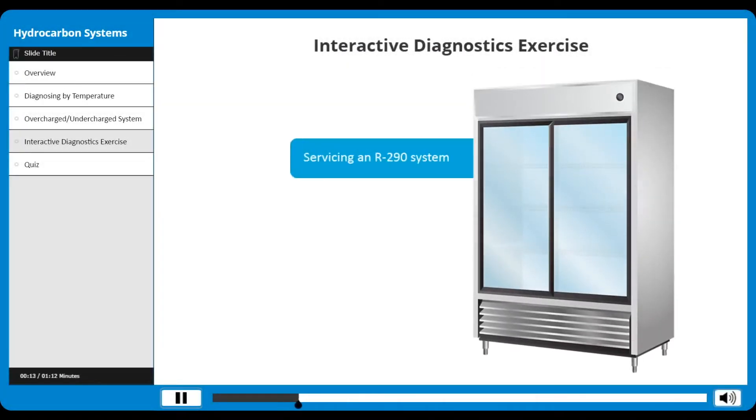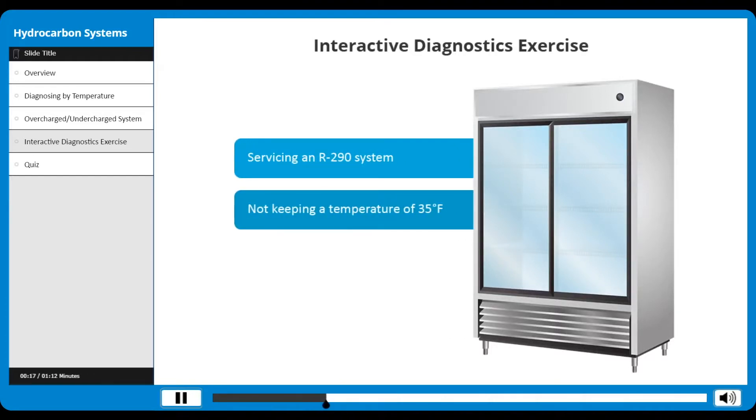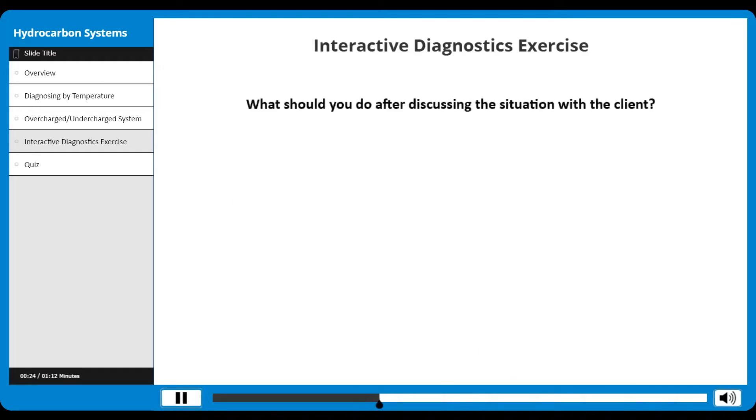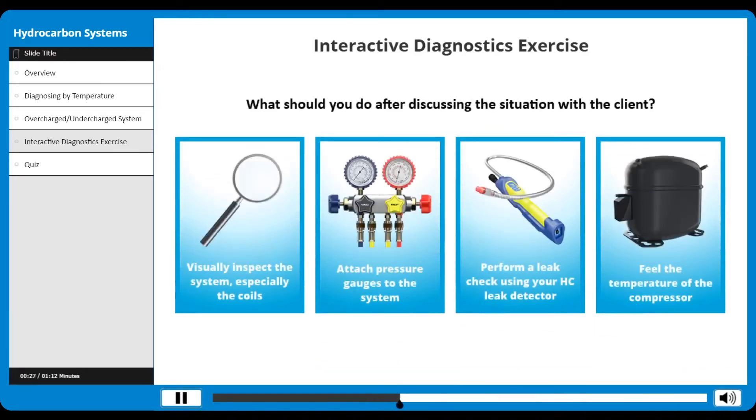You are called in to service an R290 system that is not keeping the box at the set temperature of 35 degrees Fahrenheit. The ambient temperature is 77 degrees Fahrenheit. What should you do after discussing the situation with the client?